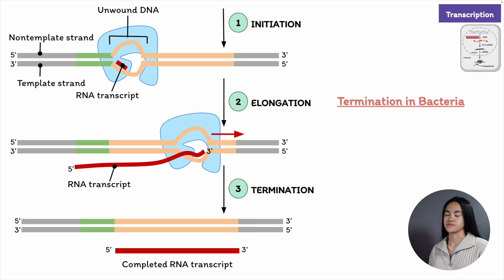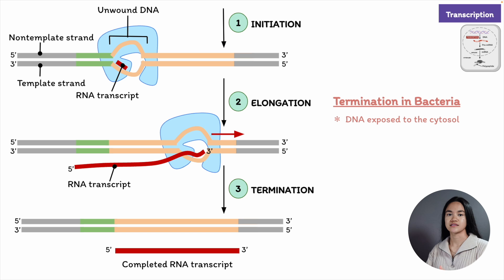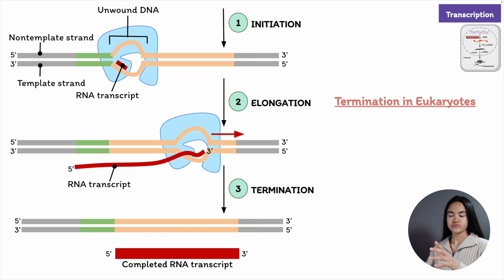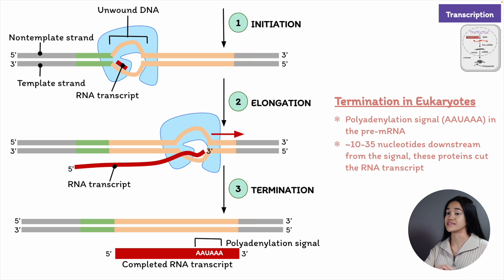The next stage is termination. In bacteria, there's a terminator sequence in the DNA, and once it's transcribed, the polymerase detaches from the DNA and releases the transcript. Recall that bacteria lack a nucleus, so their DNA is already exposed to the cytosol which contains the ribosomes on which protein synthesis takes place. In eukaryotes, RNA polymerase 2 transcribes a sequence called the polyadenylation signal sequence, which specifies a polyadenylation signal in the pre-mRNA. Once these 6 RNA nucleotides appear, they're bound by certain proteins in the nucleus, and then about 10 to 35 nucleotides downstream from the signal, these proteins cut the RNA transcript free from the polymerase, releasing the pre-mRNA.